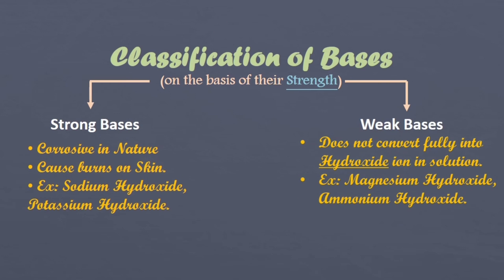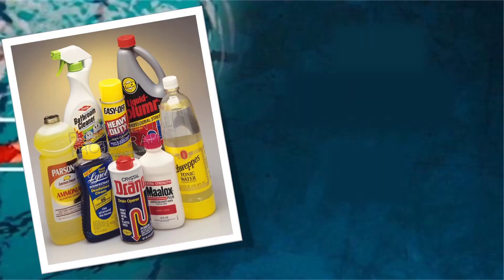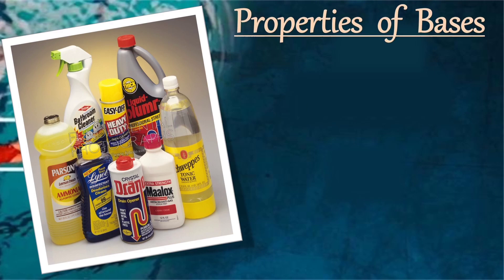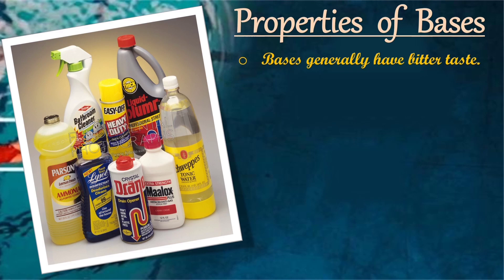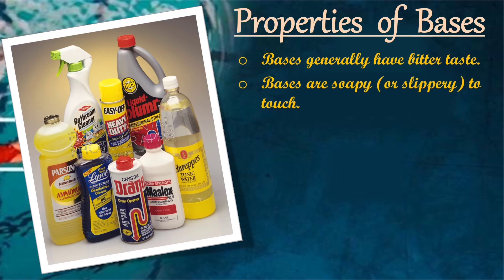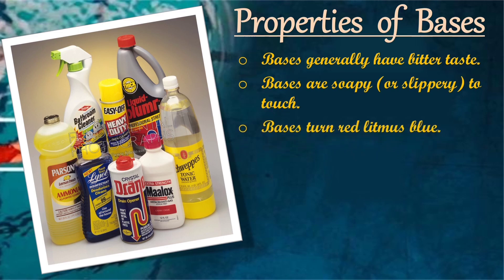Magnesium hydroxide and ammonium hydroxide are examples of weak bases. Properties of bases: bases generally have a bitter taste, bases are soapy or slippery to touch, and bases turn red litmus blue. Bases are corrosive in nature as they corrode wood, paper, and skin.